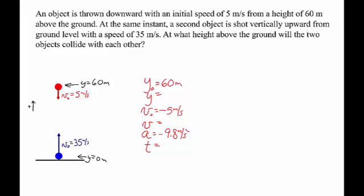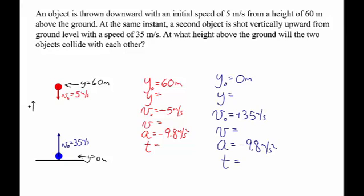And so then we set up the same table of data for the blue object. So the blue object is starting at the ground at a height of 0 meters. It's thrown upwards at 35 meters per second. So the initial velocity is positive 35 meters per second. And it also has an acceleration of negative 9.8 meters per second squared, because it also is in freefall.